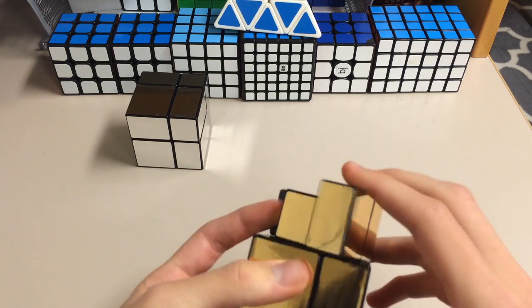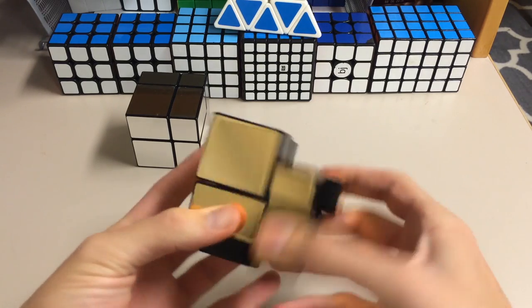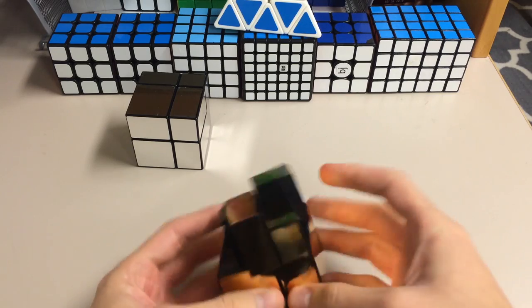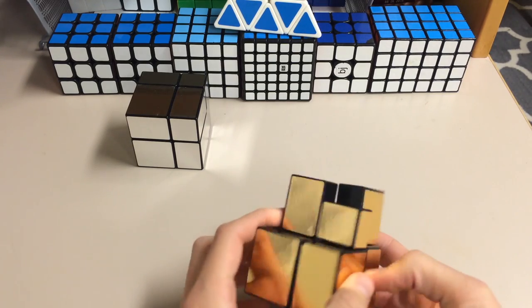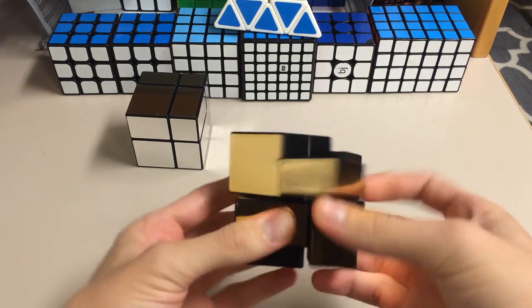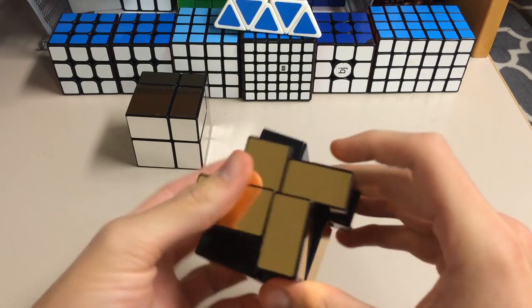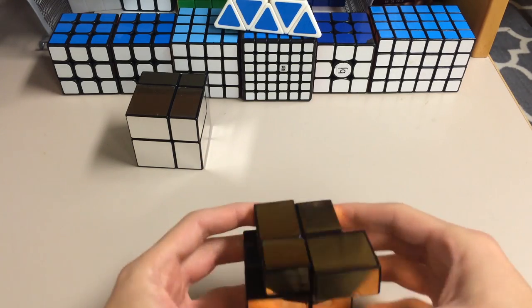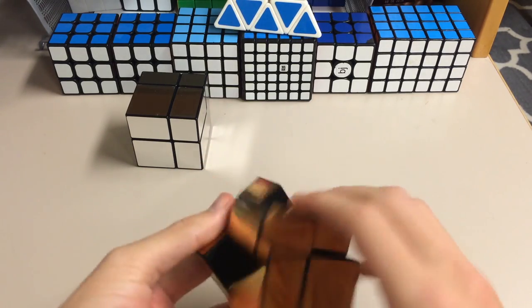Then here. We'll just do our OLL. Which I did incorrectly. How is this supposed to be? There we go. Okay, so now we simply just do a J-perm.